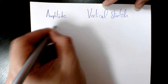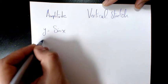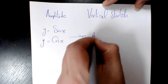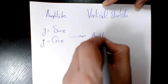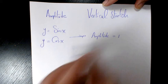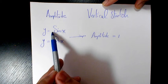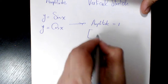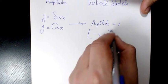Whenever you have Y equals sine X or Y equals cosine X, the amplitude is one. Why? Because the coefficient of sine X or cosine X is one for these two cases, which means that the range is going to be from negative one to positive one.